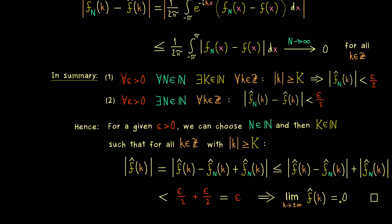Note that we have shown this for the complex Fourier coefficients, but it also holds for the real ones. This follows from the standard relation between the two representations of the Fourier series. Therefore the Riemann-Lebesgue lemma may also help you if you have an integral with a cosine or sine function involved. With that I close this video and hope to see you next time.